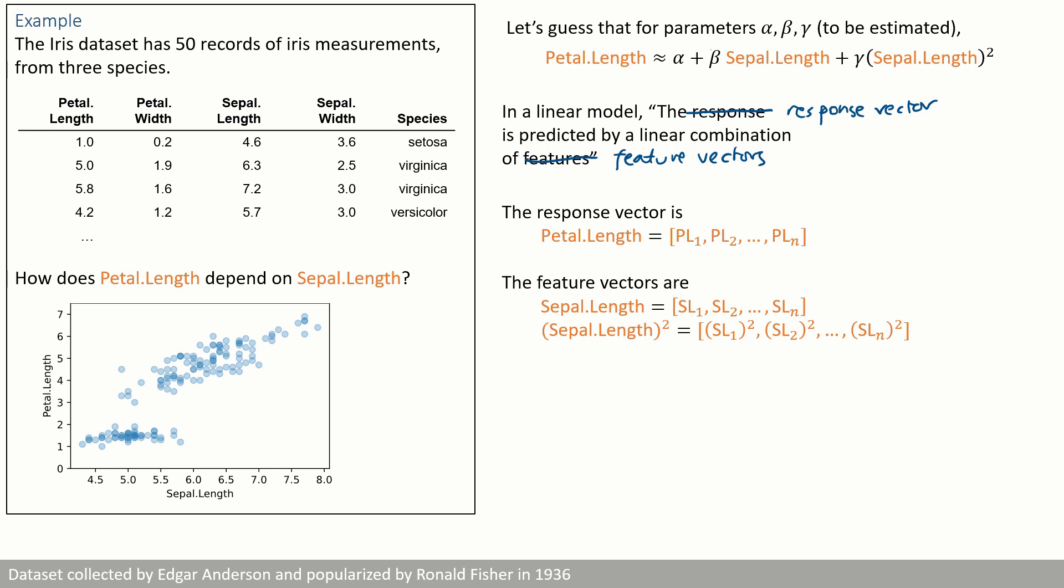And the linear combination that we're interested in is this. We're modelling the entire petal length vector PL1 up to PLN as being roughly alpha plus beta times the entire sepal length vector SL1 up to SLN plus gamma times another vector SL1 squared up to SLN squared.